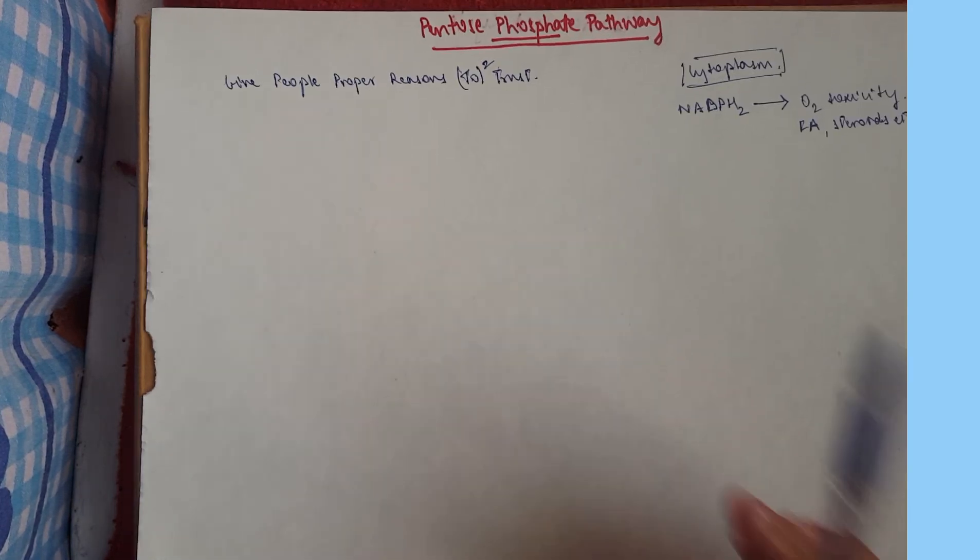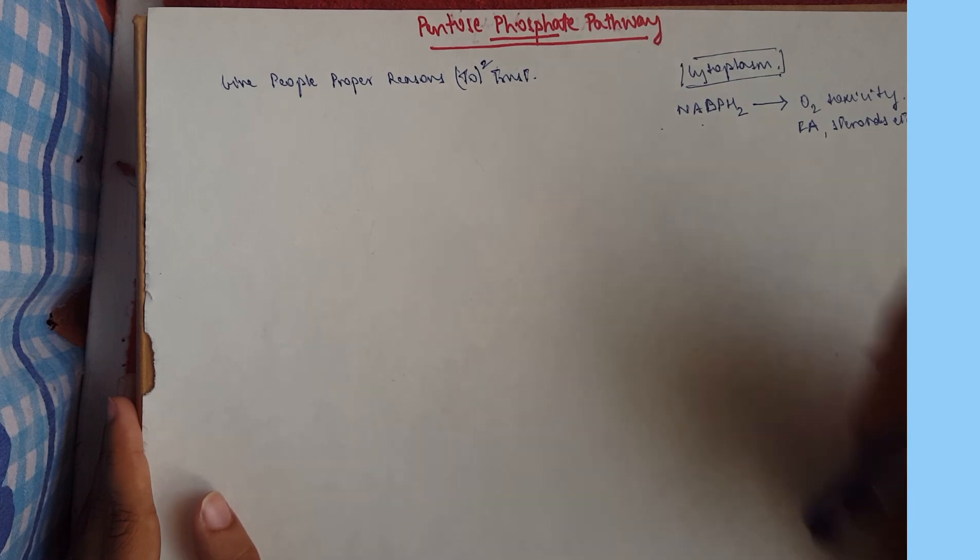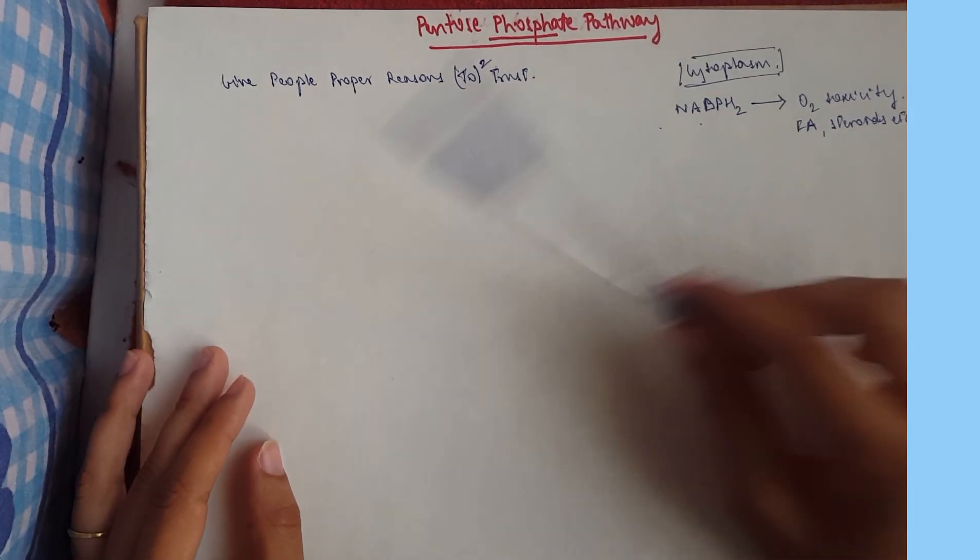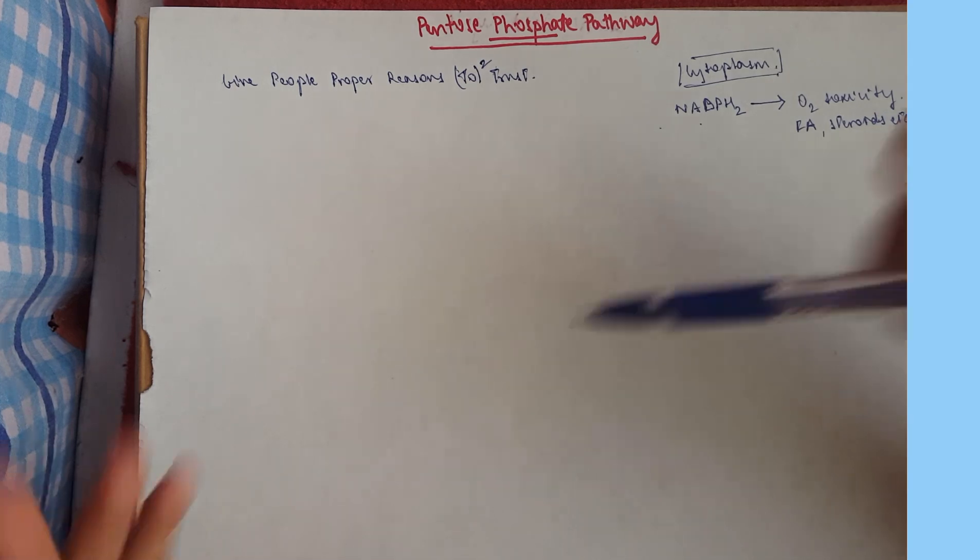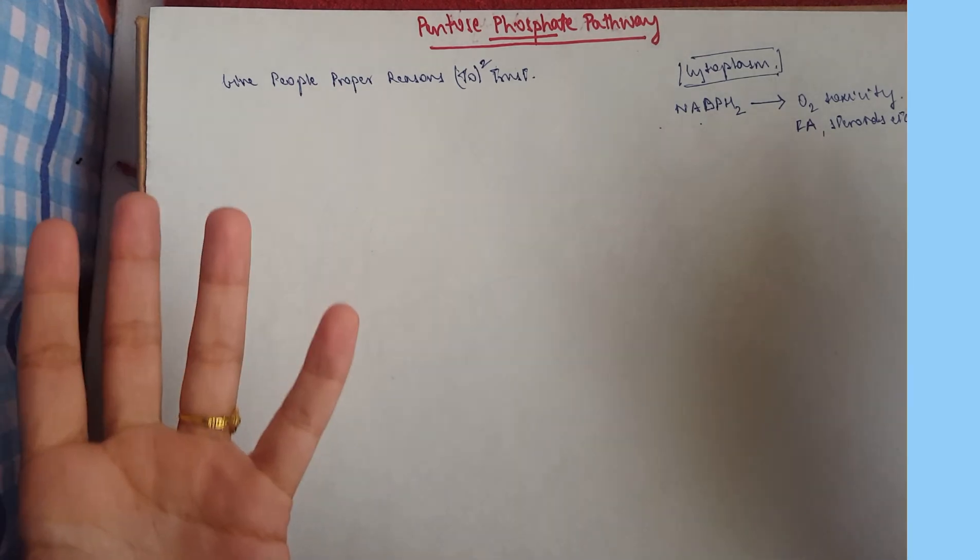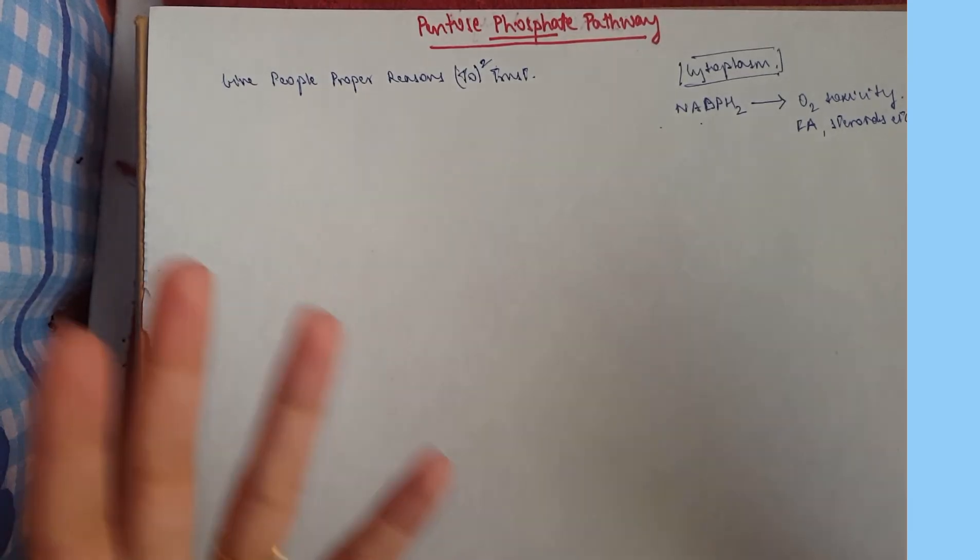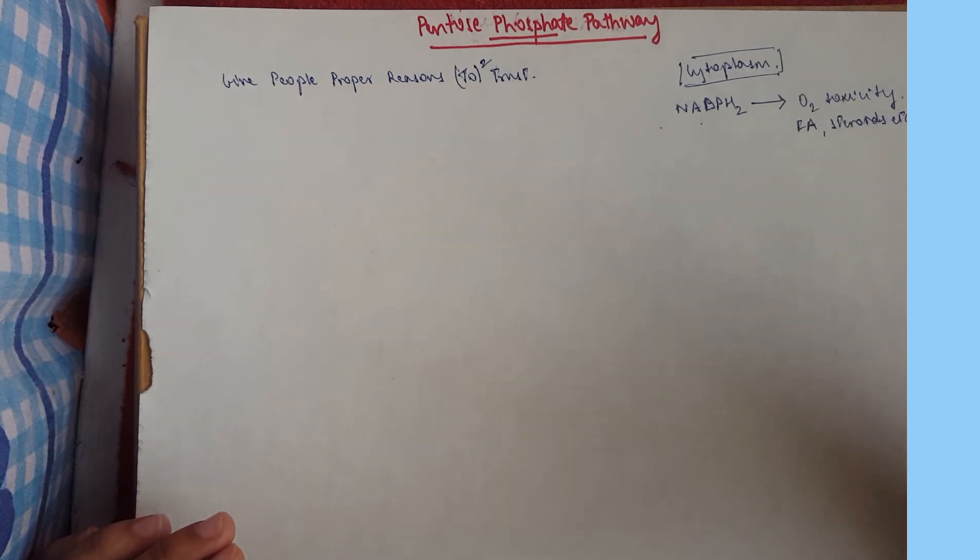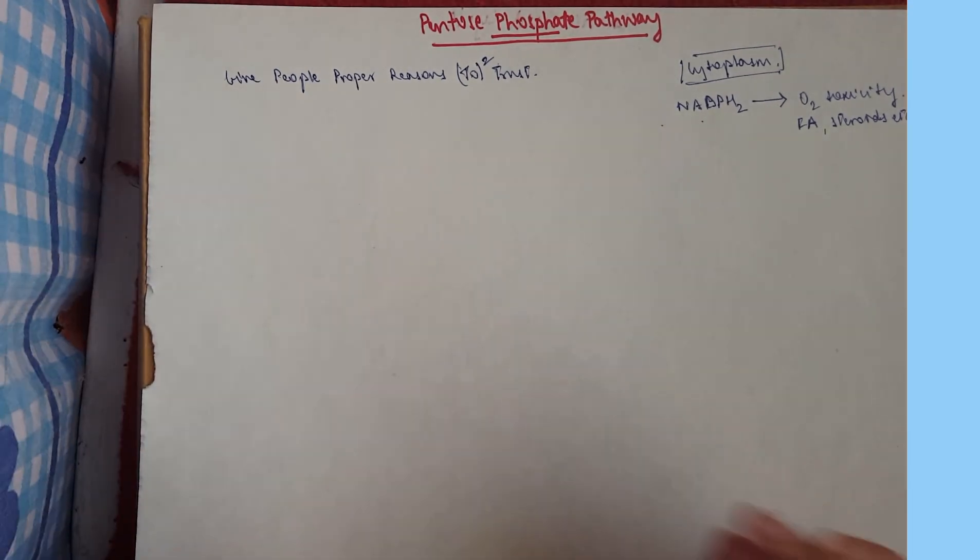It's regulated by substrate availability and NADP to NADPH2 ratio. So this process is active in the liver, the adipose tissue, the adrenal cortex, the testes, the RBCs, etc. So now these organs that I mentioned, do you see anything common? Yes they do. They are fat containing or lipid containing organs because this PPP pathway is active during lipogenesis, so the production of lipids.